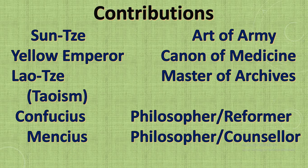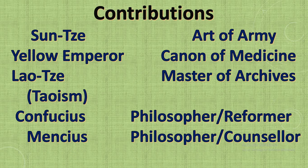Confucius said that to regulate the nation, one must first regulate personal life, because only through personal life can a person change the nation. When family life is regulated, society is regulated; when society is regulated, the nation is regulated. Through their ideas and visions, these philosophers sought to change society and hold a top position in Chinese civilization.